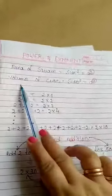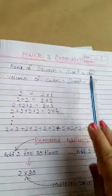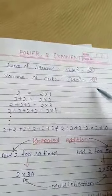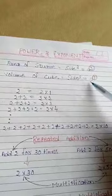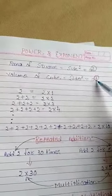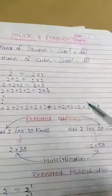Same way, Volume of Cube equals Side to the power 3. That means if side is A, then Volume equals A to the power 3.